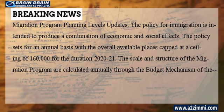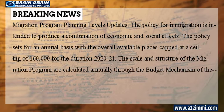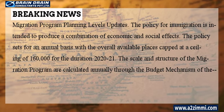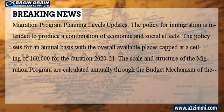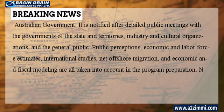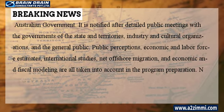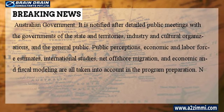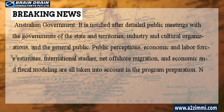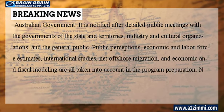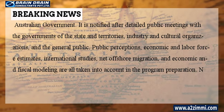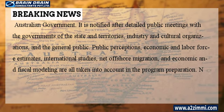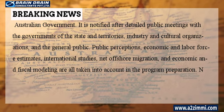The scale and structure of the migration program are calculated annually through the budget mechanism of the Australian government. It is determined after detailed public meetings with the governments of the states and territories, industry and cultural organizations, and the general public.